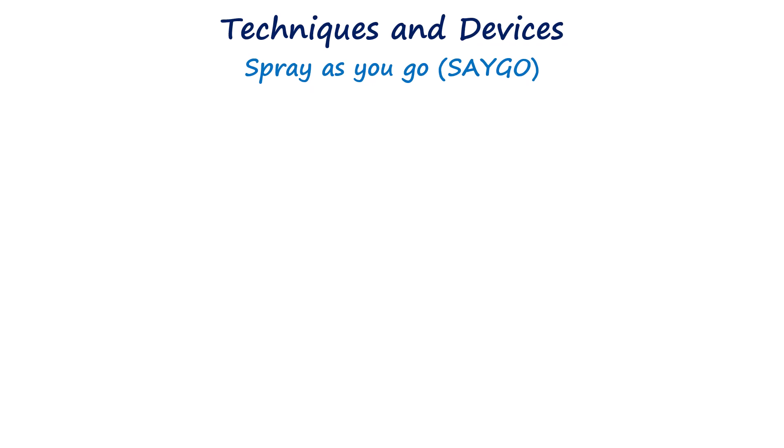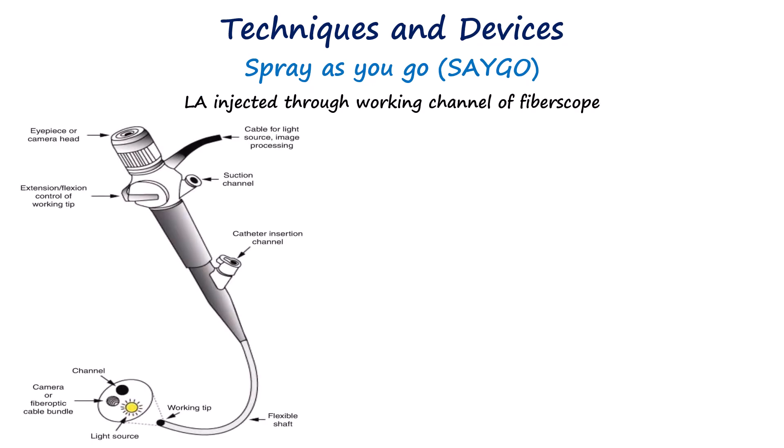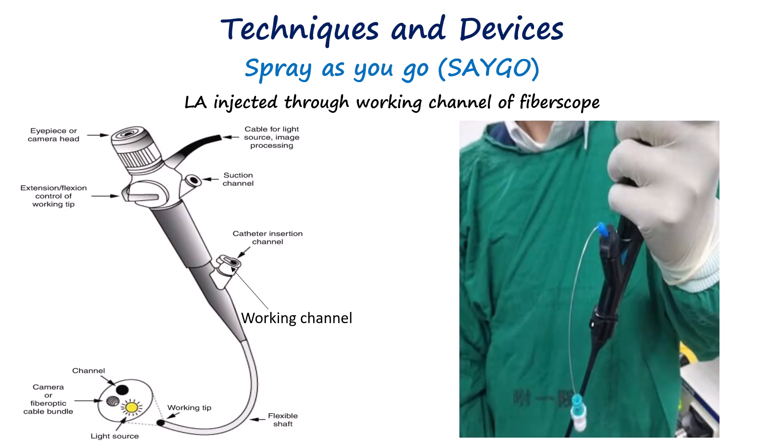For deeper structures like the vocal cords and trachea, we can make use of the fibroscope's working channel. This method is called the spray-as-you-go technique. Through the working channel, a small amount of lidocaine can be delivered directly onto the vocal cords through small tubing like an epidural catheter. As the scope advances, local anesthetic can be deposited into the trachea.